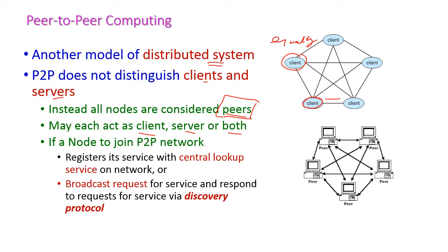A particular node can provide services to all other nodes in the network, or it can receive services from any other node. If a new node wants to join the peer-to-peer network, it must register its service to the network via a central lookup service. It then requests broadcast for service and responds to requests via a discovery protocol.